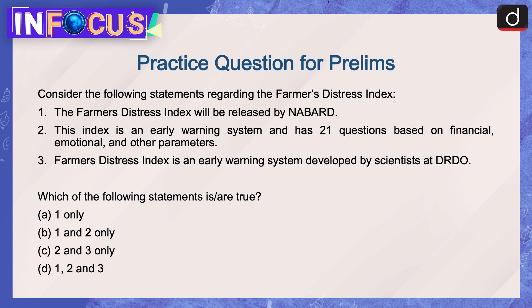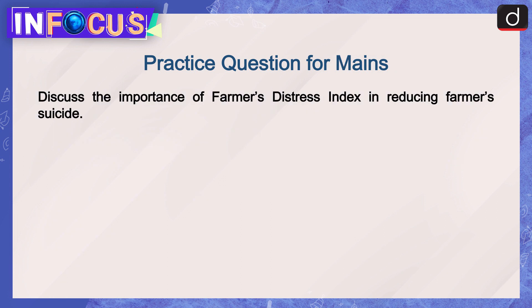Now it's time for the practice questions. Prelims question — Consider the following statements regarding the Farmer's Distress Index: 1. The Farmer's Distress Index will be released by NABARD. 2. This index is an early warning system and has 21 questions based on financial, emotional and other parameters. 3. Farmer's Distress Index is an early warning system developed by scientists at DRDO. Which of the following statements is/are true? (a) 1 only, (b) 1 and 2 only, (c) 2 and 3 only, or (d) 1, 2 and 3. Mains question: Discuss the importance of the Farmer's Distress Index in reducing farmer suicides.